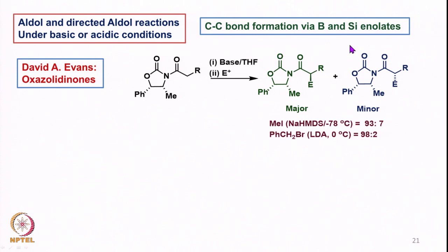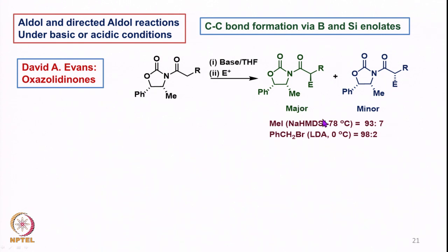Then we did C-C bond formation via boron and silicon enolates. David Evans introduced oxazolidinones of this kind, and we could carry out C-C bond formation using different types of bases like NaHMDS or LDA. In this context we also discussed various kinds of boron and silicon enolates.